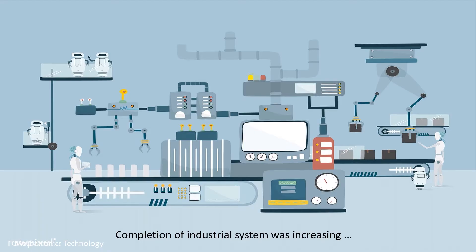The complexity of industrial systems is increasing. There are many combinations of electronic, mechanical, and control systems in industrial systems and also in other systems, for example those we are using in our houses.